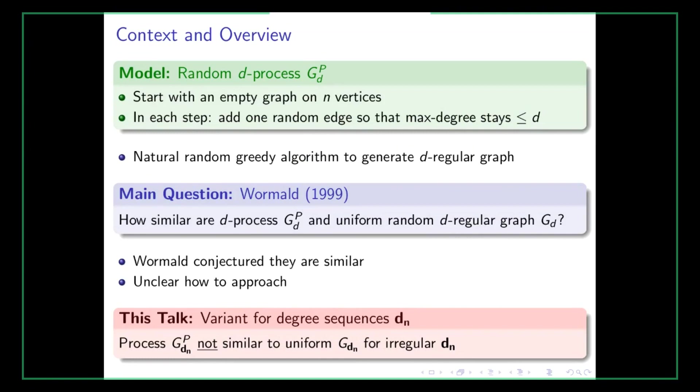You don't always get a d-regular graph at the end, but in 1991, Bruchensky and Wormald proved that if there exists a d-regular graph on n vertices, the process indeed ends with a d-regular graph with high probability. For all purposes, we'll assume that the final graph is a d-regular graph. This is a very interesting process because it's the simplest and most naive way of constructing a d-regular graph — the natural random greedy algorithm to generate a d-regular graph.